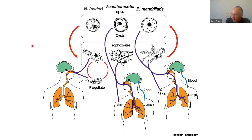The route of acquisition for PAM is different from GAE. Naegleria fowleri has a flagellated form free-swimming in water — that is the source of infection. When water gets up the nose during swimming and diving, or through nasal irrigation for religious or health reasons, the organism passes through the olfactory epithelium and directly into the central nervous system.